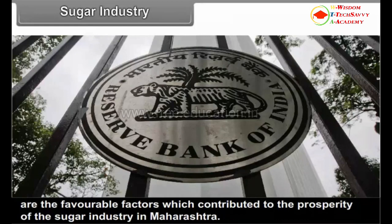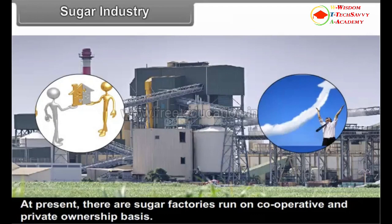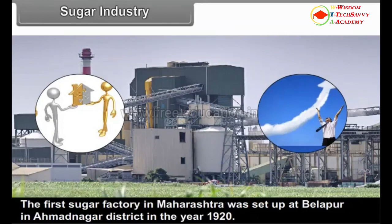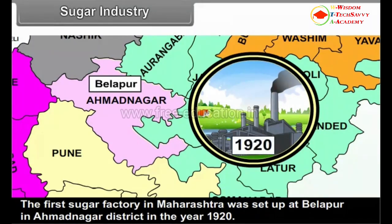At present, there are sugar factories run on cooperative and private ownership basis. The first sugar factory in Maharashtra was set up at Belhapur in Ahmednagar district in the year 1920.